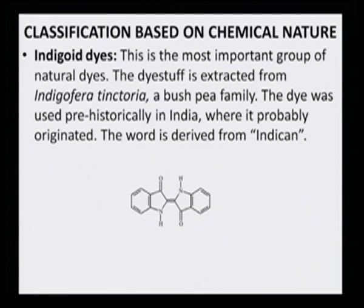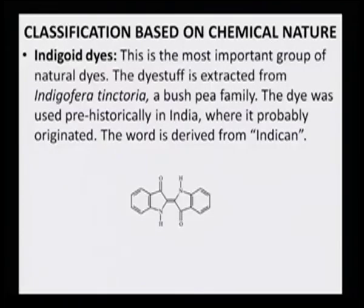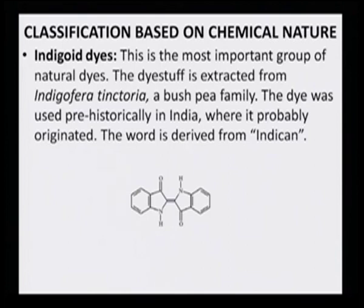Classification based on chemical nature — I will repeat the natural dye names so you get a good idea about the relationship between color and structure. The indigoid dye is the most common group of natural dyes. The dyestuff is extracted from Indigofera tinctoria, a bush family member. The dye was used pre-historically in India, where it probably originated. The word is derived from indican. It has a benzene ring, a carbonyl group, an NH, and they are connected with a C=C double bond. That makes it a blue-colored dye because it has all the requisites of chromophore and oxochrome.